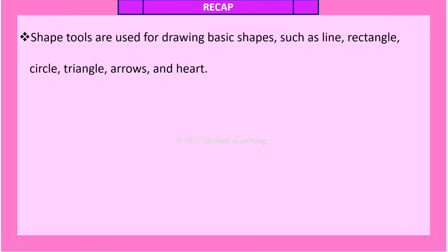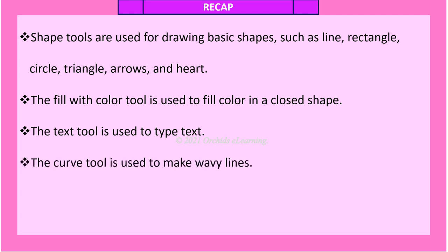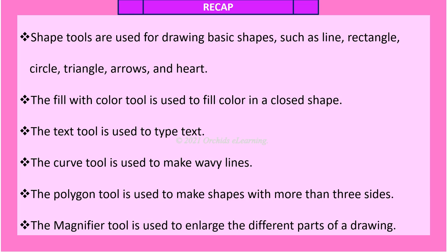Shape tools are used for drawing basic shapes such as line, rectangle, circle, triangle, arrows, and heart. The Fill with Color tool is used to fill color in a closed shape. The Text tool is used to type text. The Curve tool is used to make wavy lines. The Polygon tool is used to make shapes with more than three sides. The Magnifier tool is used to enlarge the different parts of a drawing.